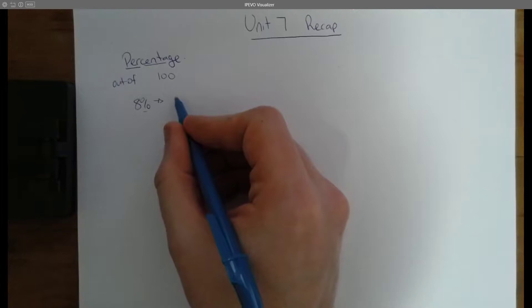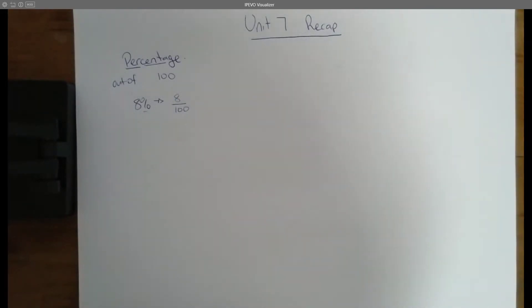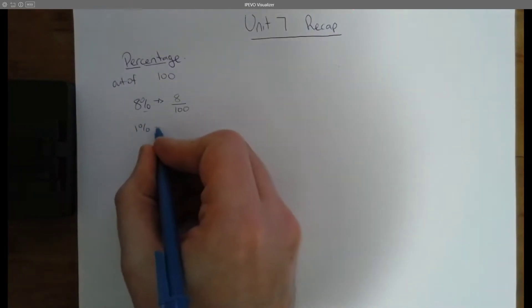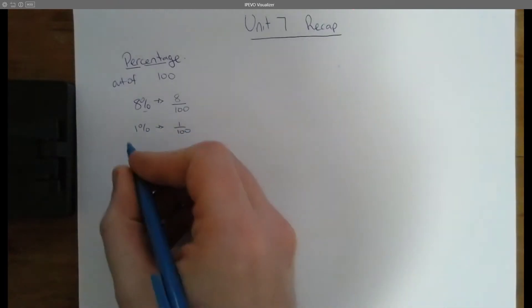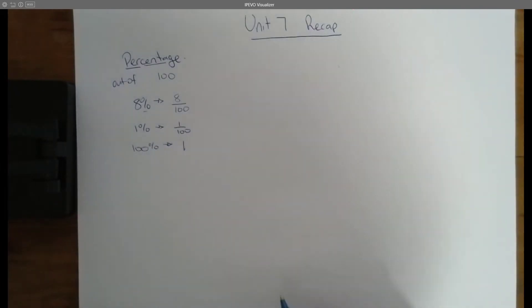And so from there, we learned that we could turn a percent quite easily into a fraction by just putting it over 100. 1% was the same as 1 over 100, whereas 100% was the same as just 1, or 100 over 100. So we talked about how we can use some simplification when we're working with those sorts of things.